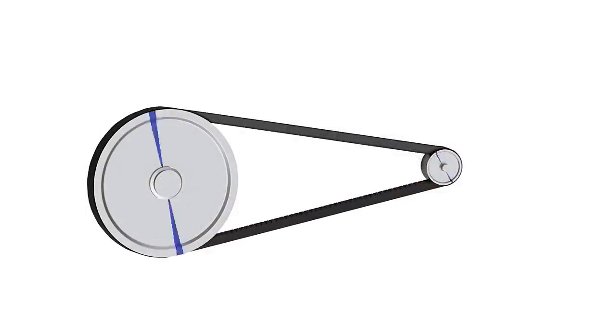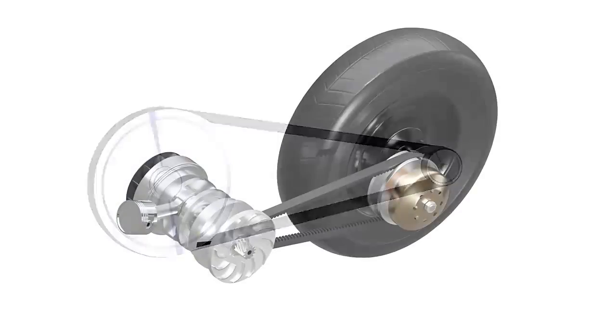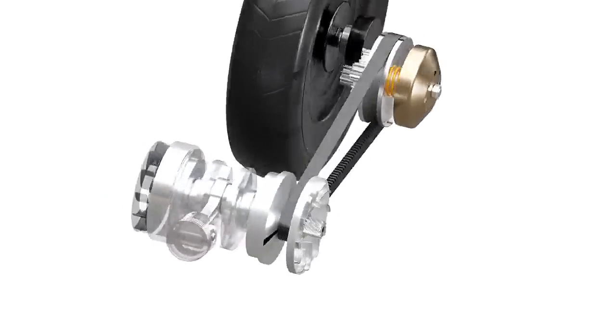To obtain high RPM, the diameter of the driver pulley decreases, and that of the driven pulley increases. Let's understand how this is achieved in the actual scooter CVT.